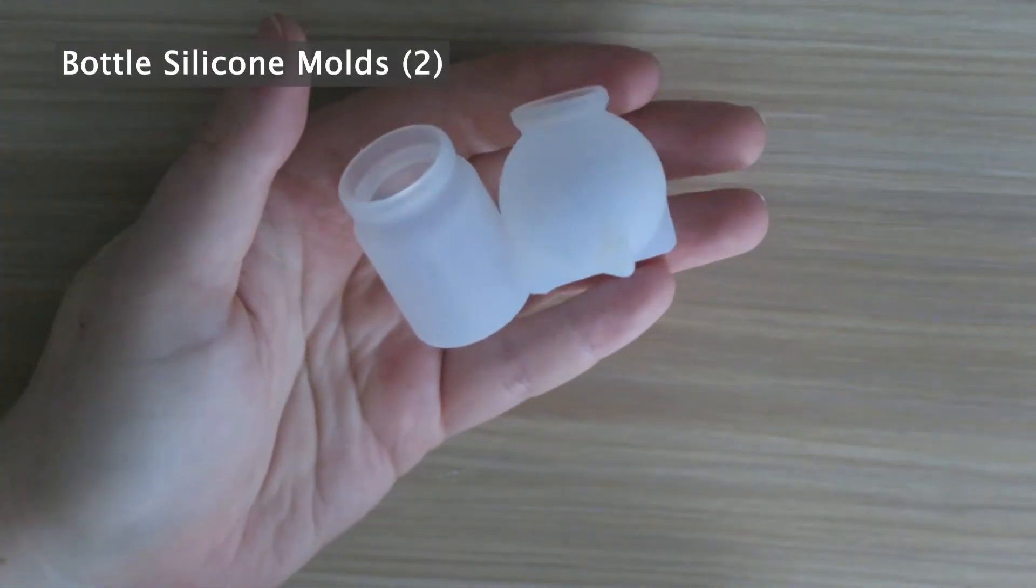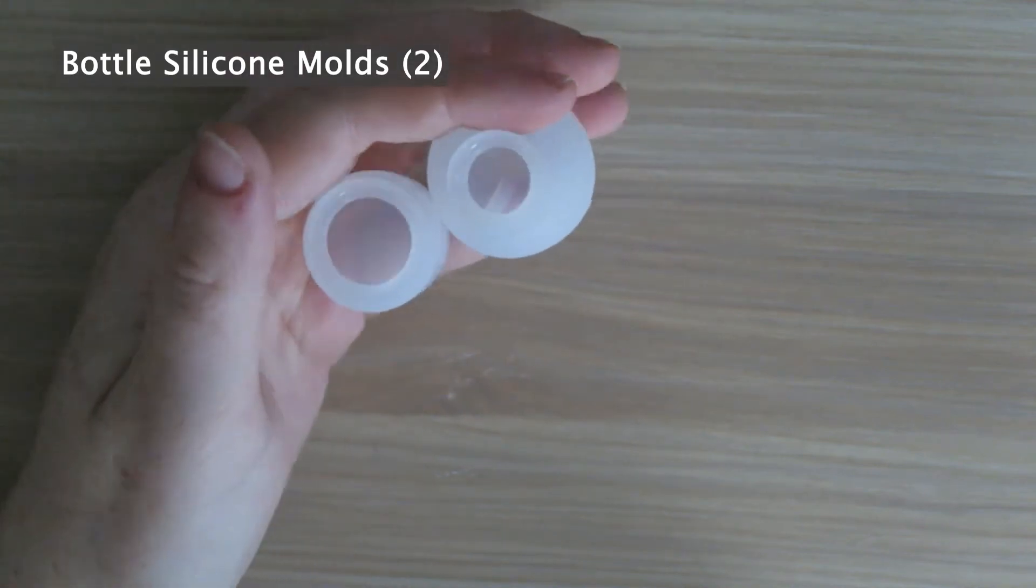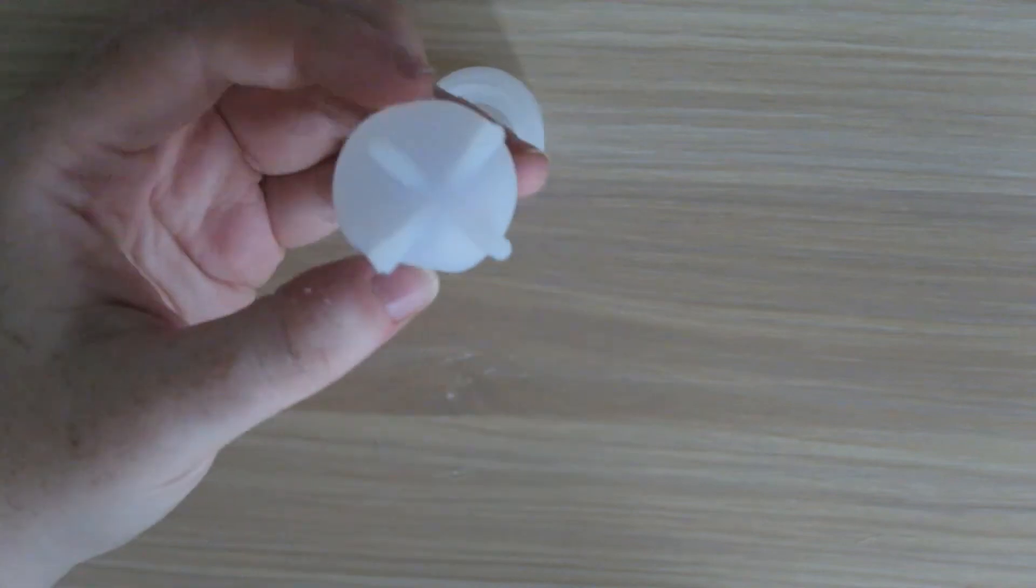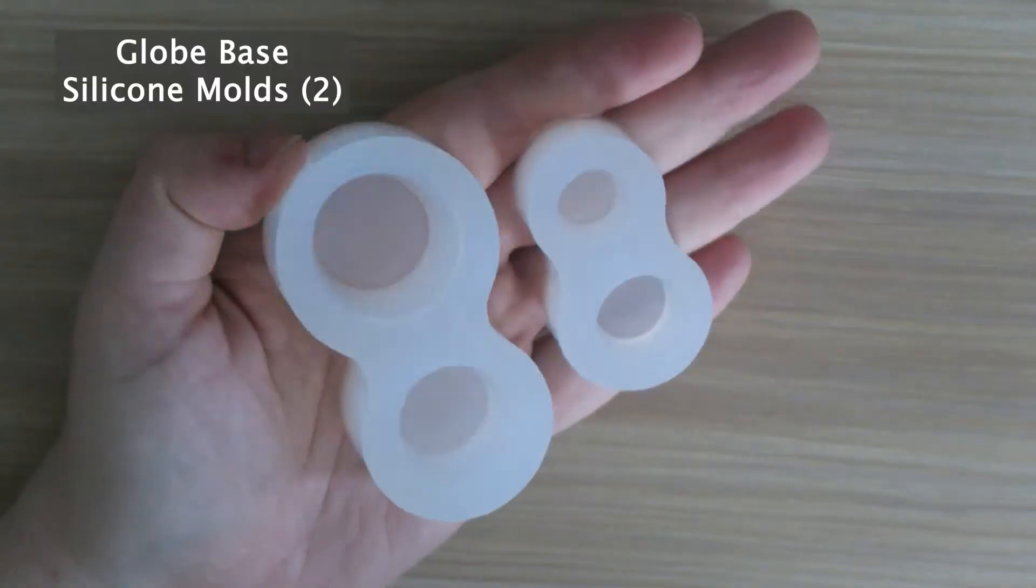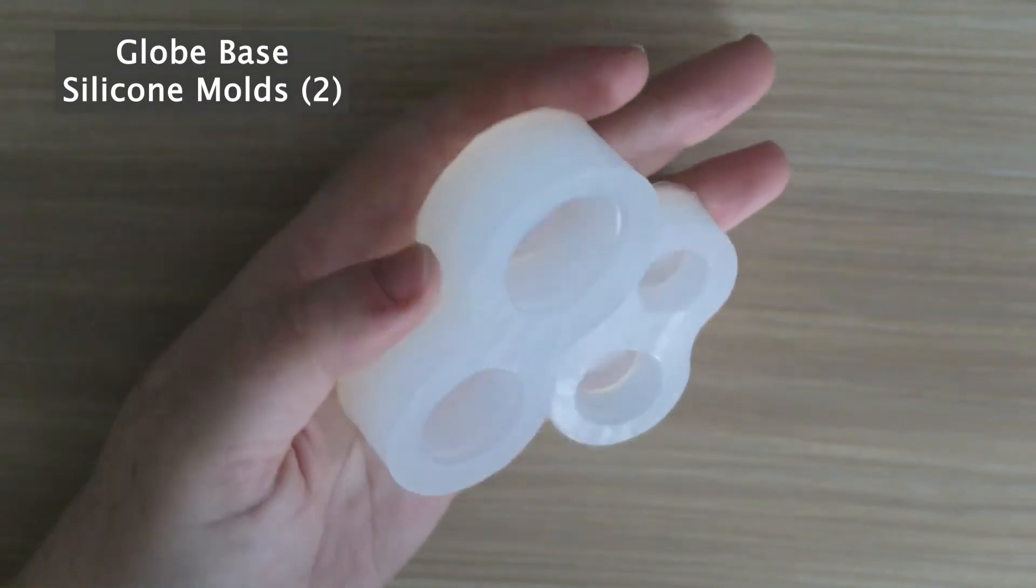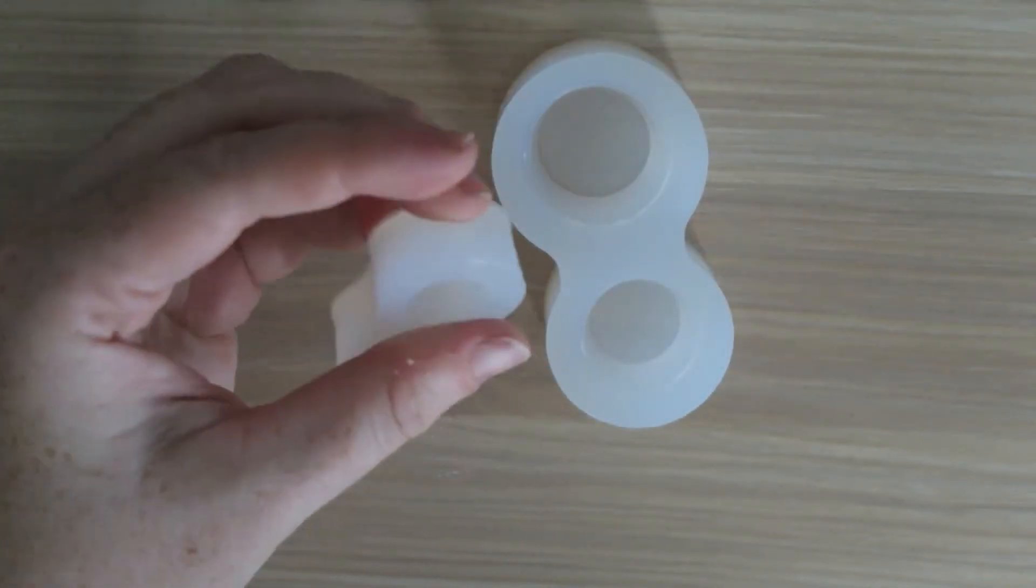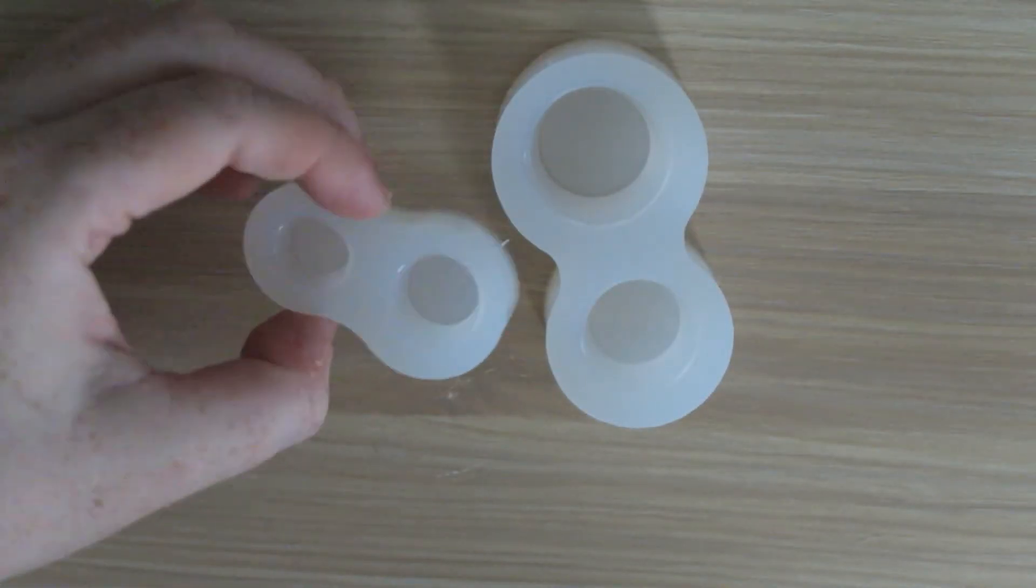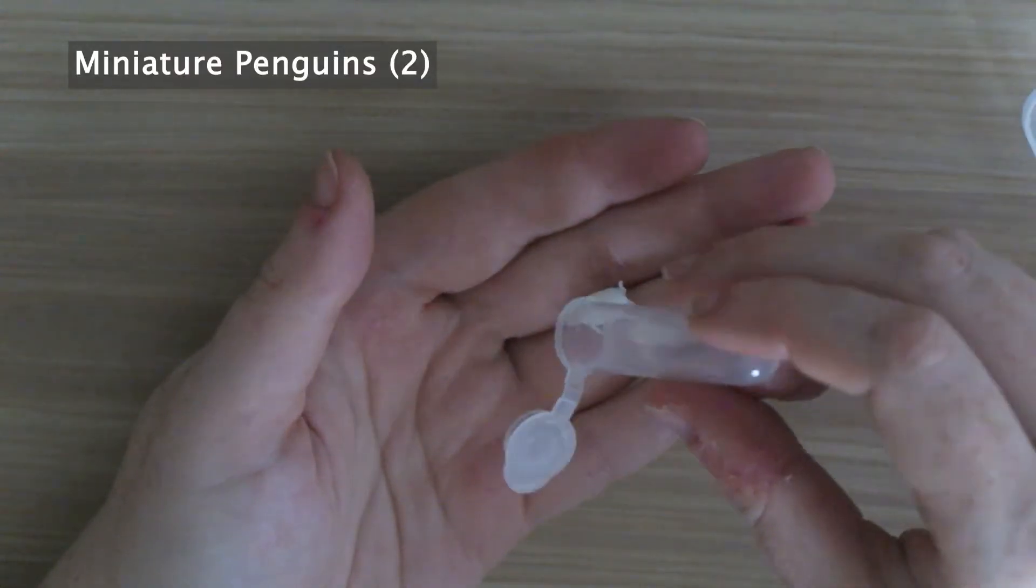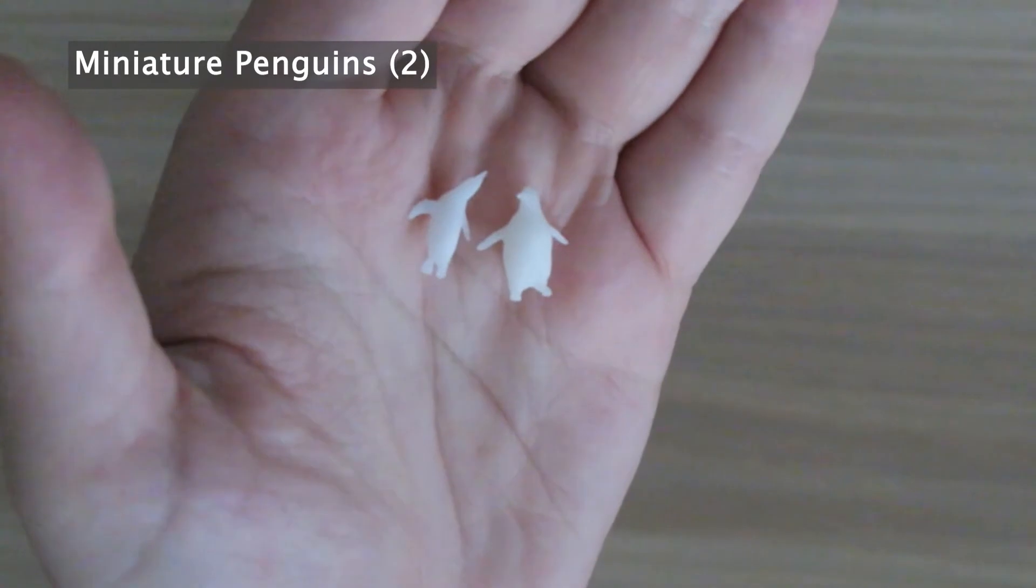Then for the silicon molds, first we have a couple bottle shape molds: a cylinder as well as a sphere. To go along with those molds we have this set of two molds here. They are to make bases so that the bottle molds can be turned into snow globes. Then we have a couple of really cute and small miniature penguins in two different styles.